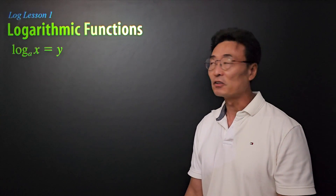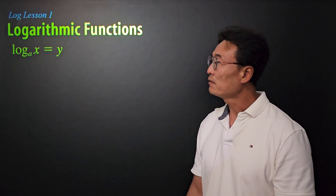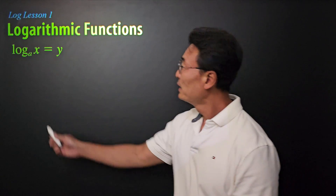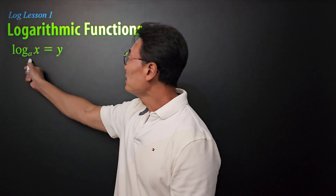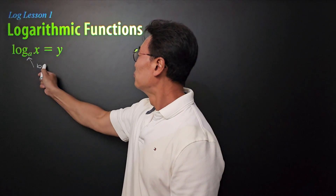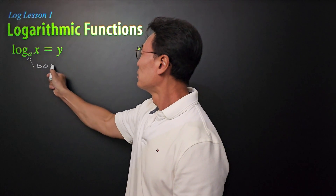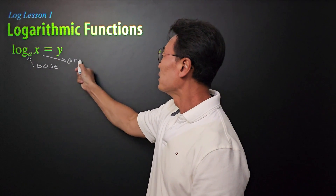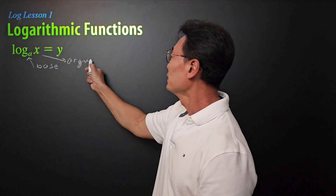This is lesson one on logs. First let's go through the basics. When we have log base a of x equals y, a is what we call the base, and x is what we call the argument.